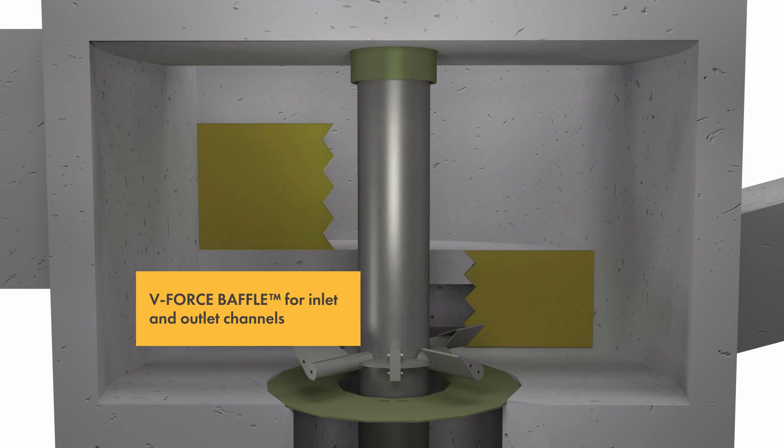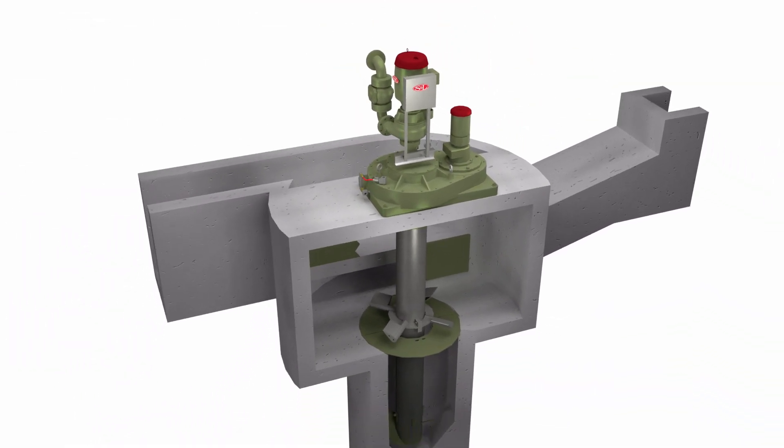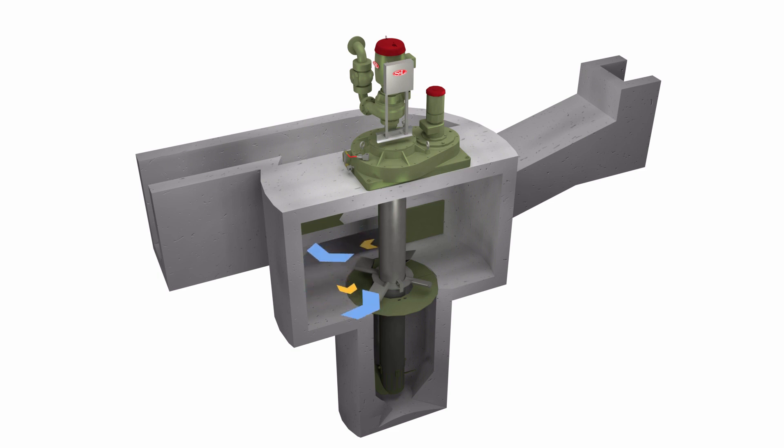The V-Force Baffle is an integral flow control baffle located in the main chamber. It directs the inlet flow creating forced vortex flow that prevents short-circuiting and allows for a full 360-degree rotation through the inlet and outlet of the chamber.